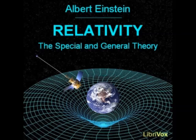We must draw attention here to one of these deviations. According to Newton's theory, a planet moves around the sun in an ellipse, which would permanently maintain its position with respect to the fixed stars, if we could disregard the motion of the fixed stars themselves and the action of the other planets under consideration. Thus, if we correct the observed motion of the planets for these two influences, and if Newton's theory be strictly correct, we ought to obtain for the orbit of the planet an ellipse, which is fixed with reference to the fixed stars. This deduction, which can be tested with great accuracy, has been confirmed for all the planets, save one, with the precision that is capable of being obtained by the delicacy of observation attainable at the present time.